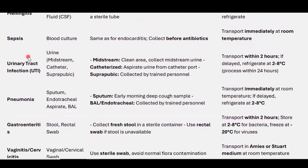For UTI — urinary tract infections — urine is required. Collection types include midstream, catheter, and suprapubic. For midstream, collect urine at the mid-point of urination from a clean area. For catheterized patients, aspirate urine from the catheter port. Suprapubic collection must be performed by trained personnel.